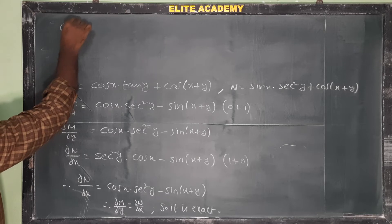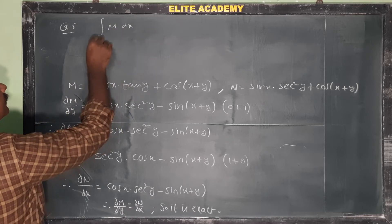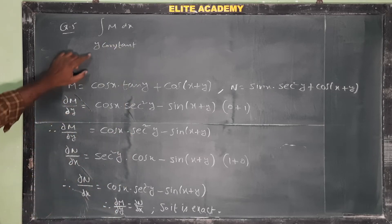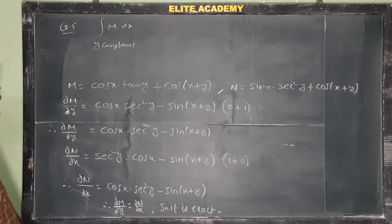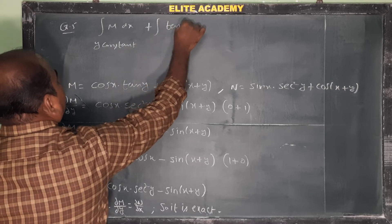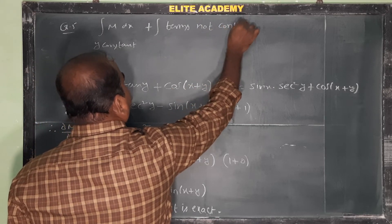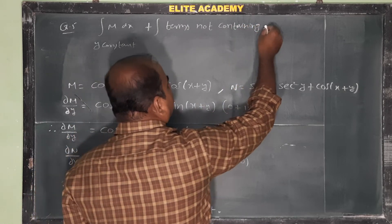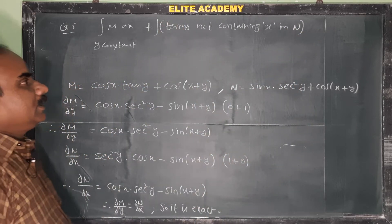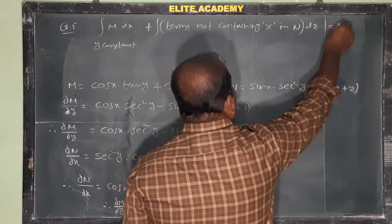So this is an exact differential equation. The general solution formula is: integral of M dx (treating y as constant) plus integral of terms in N not containing x, integrated with respect to y, equals C.